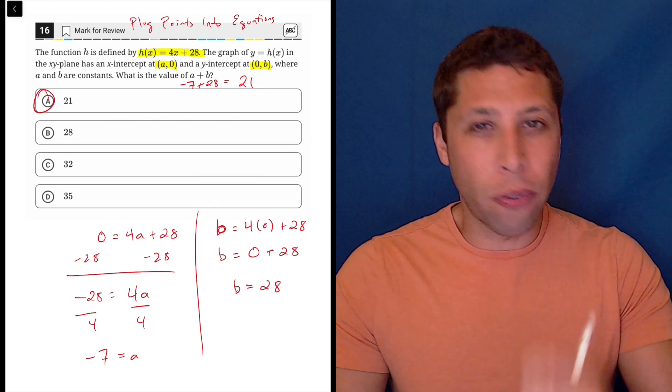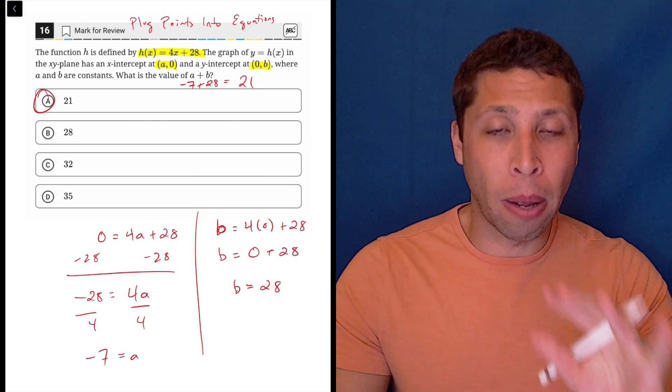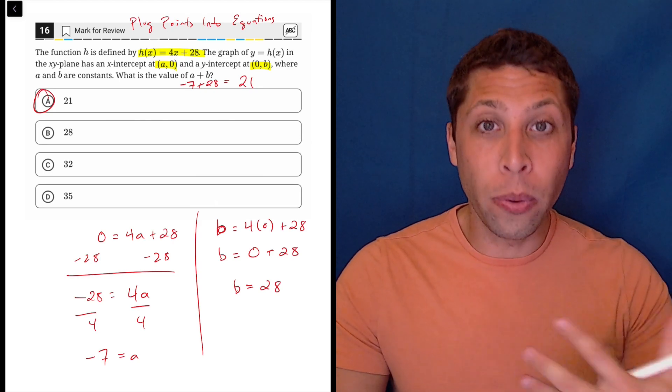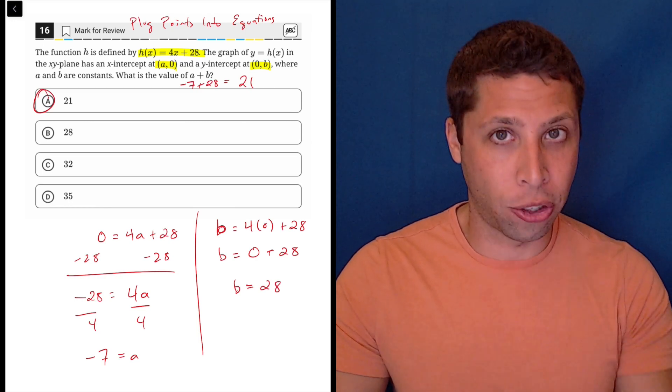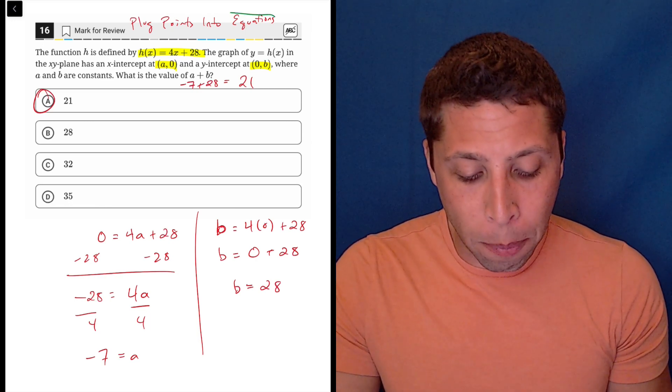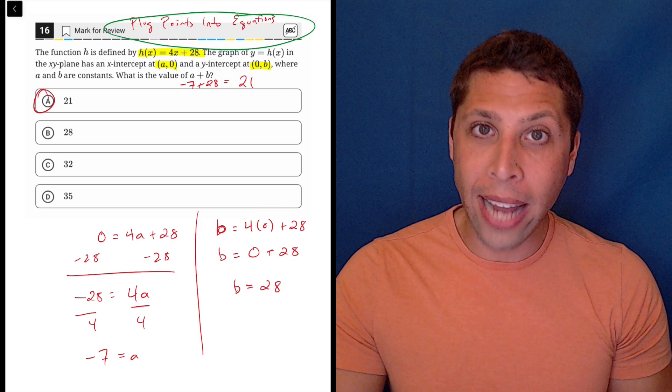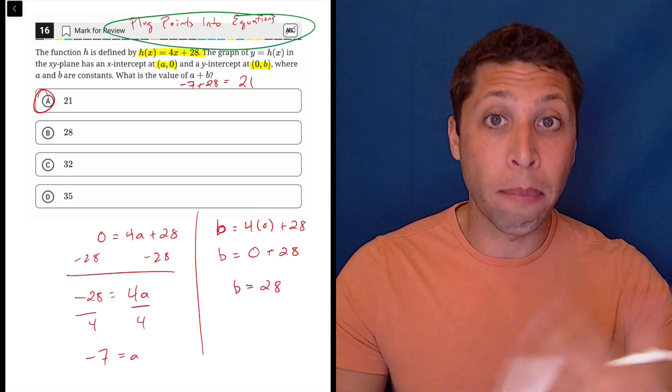even if you do default to the graph. That's okay. I'm okay with using the calculator, but I do think you should be able to quickly look at a question and know if the plug points into equations strategy is viable. If it's something you could do.